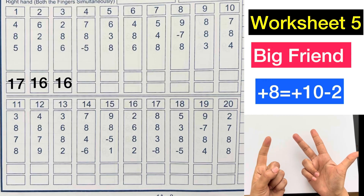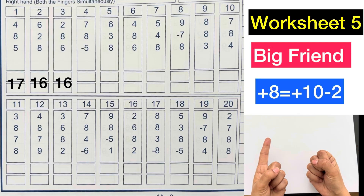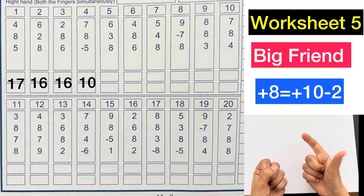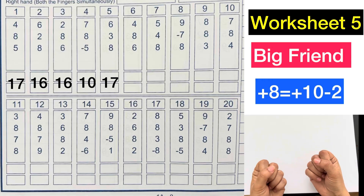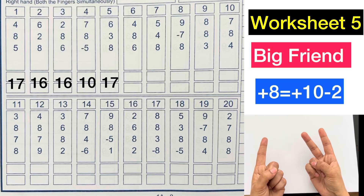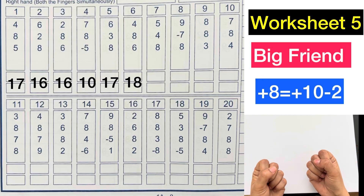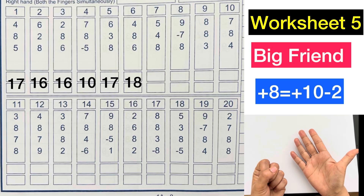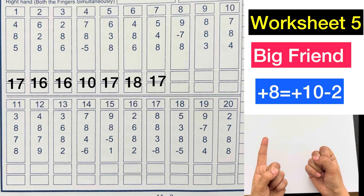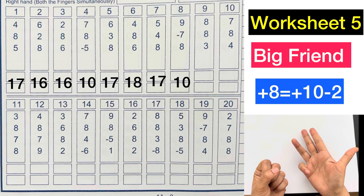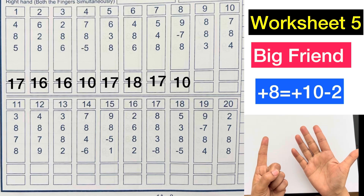7 plus 8 plus 10 minus 2 minus 5, answer is 10. 6 plus 3 plus 8 plus 10 minus 2, answer is 17. 4 plus 8 plus 10 minus 2 plus 6, answer is 18. 5 plus 4 plus 8 plus 10 minus 2, answer is 17. 9 minus 7 plus 8 plus 8 plus 10 minus 2 plus 3, answer is 19.